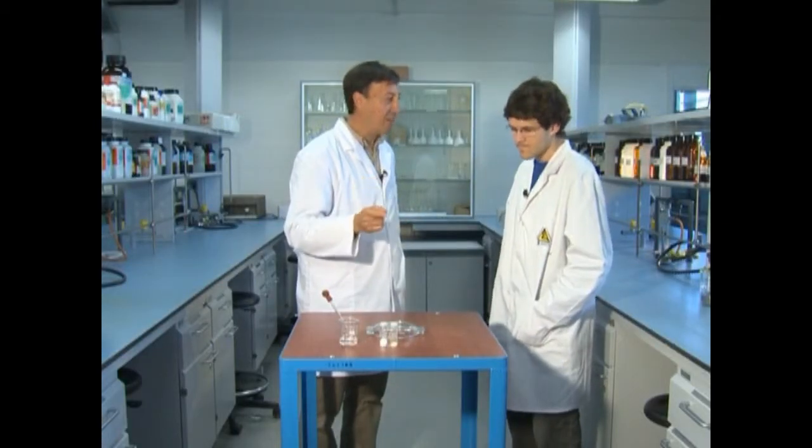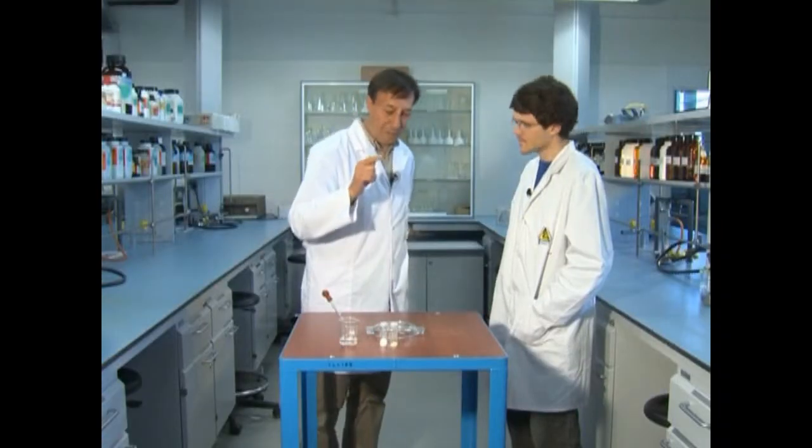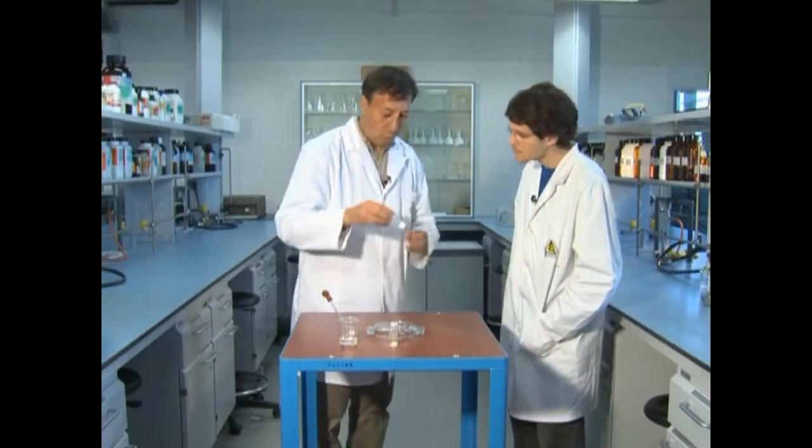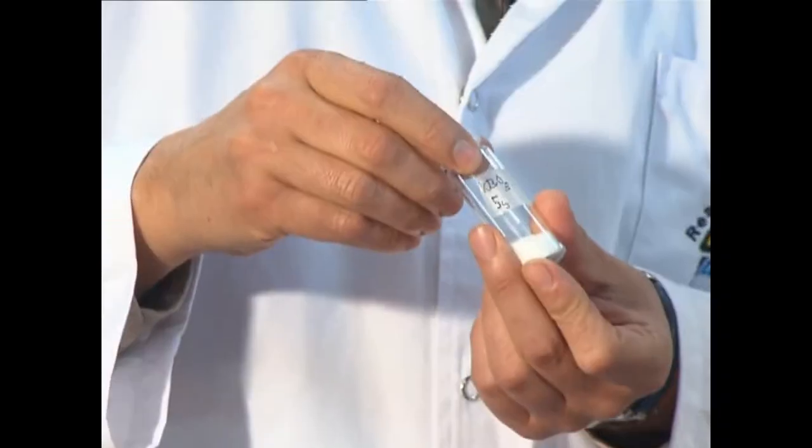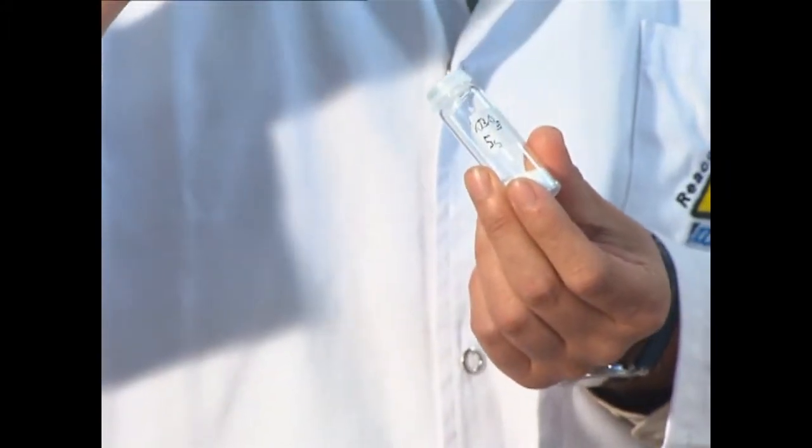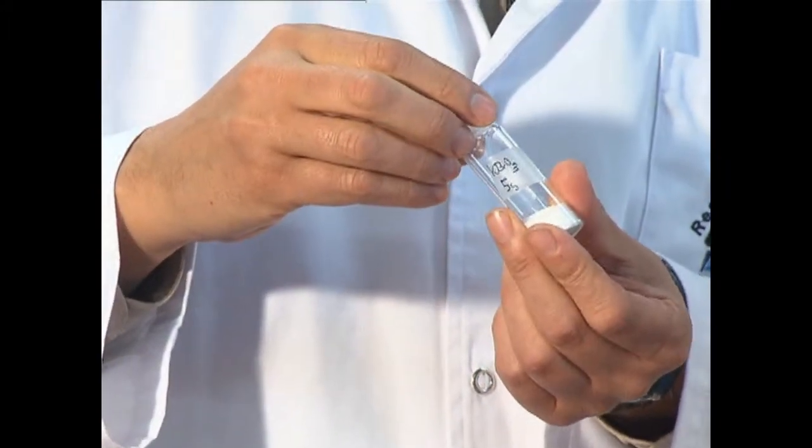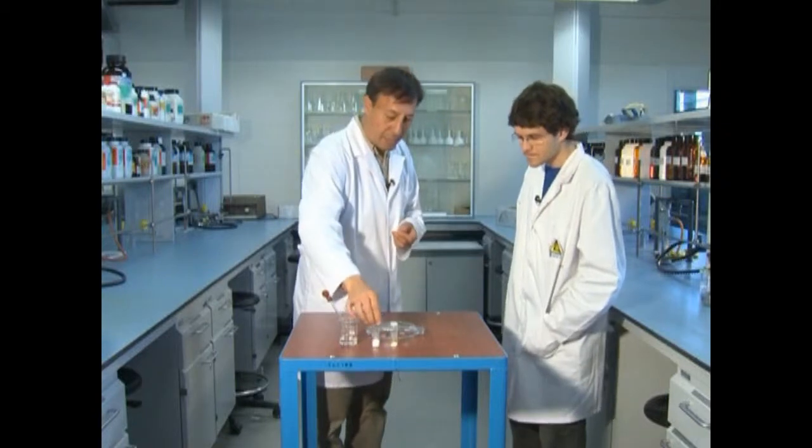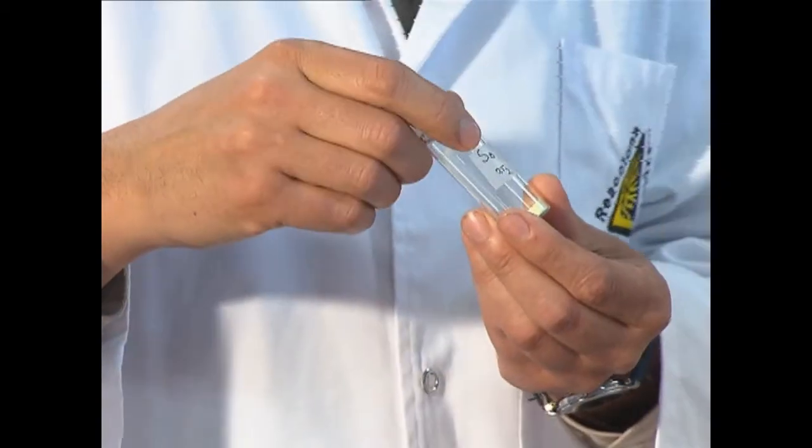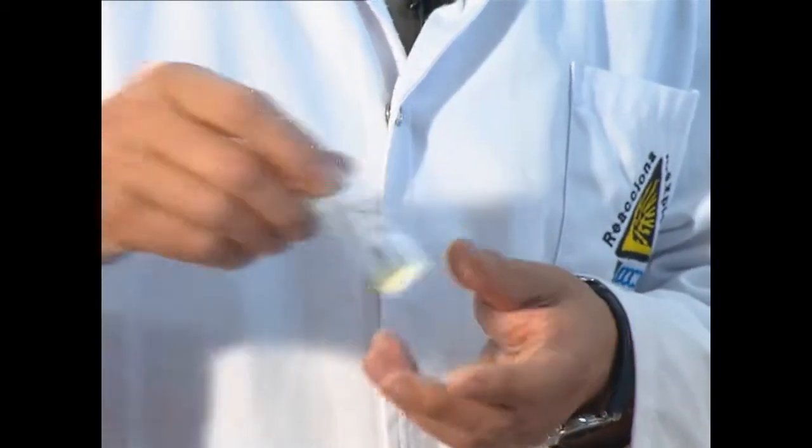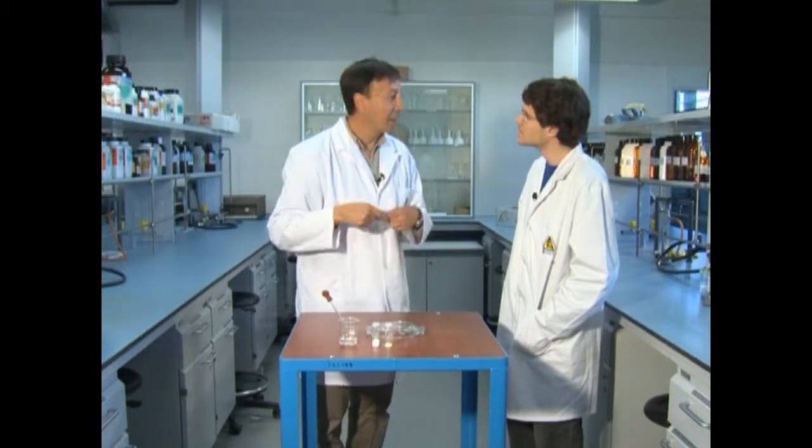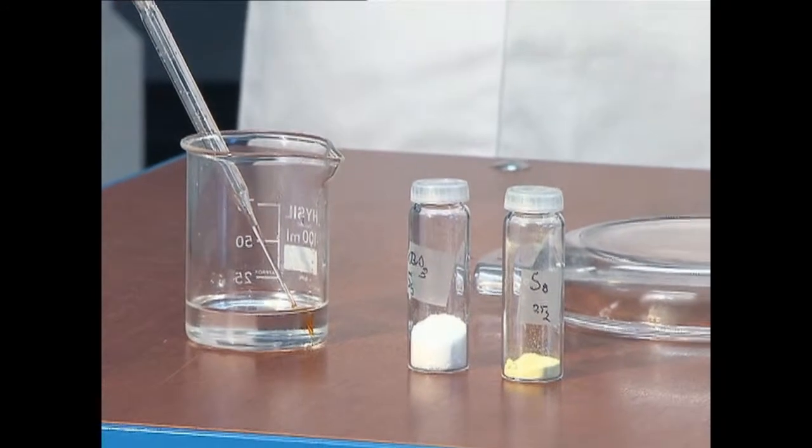I ja veuràs aquí la pudor que farà l'experiment, en el qual barrejarem un compost que conté brom, però amb un estat d'oxidació molt gran. Es tracta del bromat de potassi. I el barrejarem amb un reductor, que és el sofre. El sofre i el bromat els farem reaccionar per donar brom.